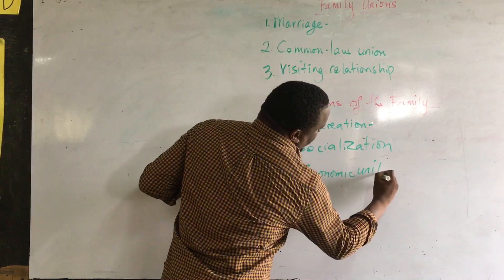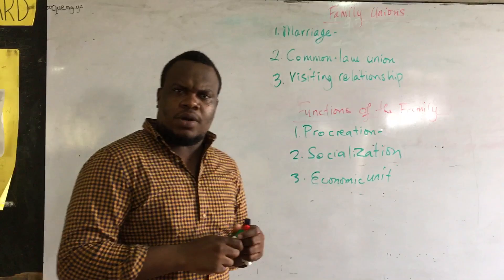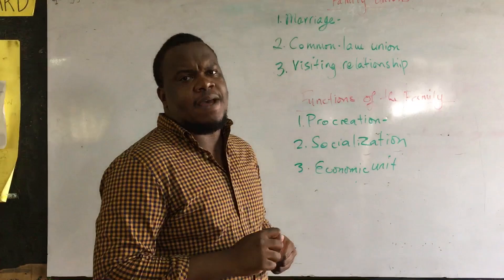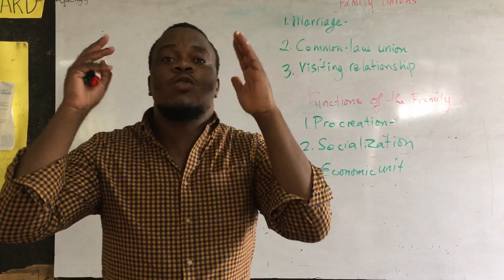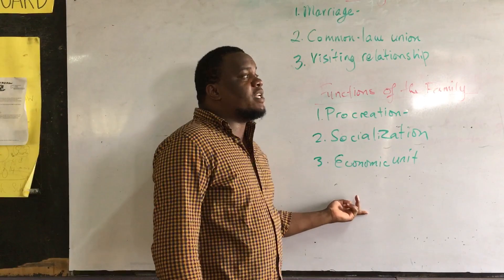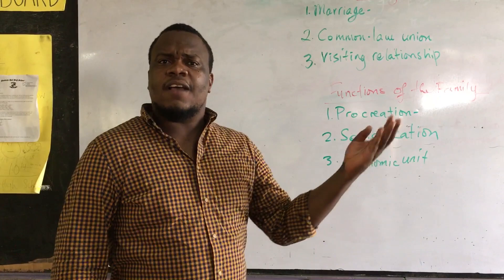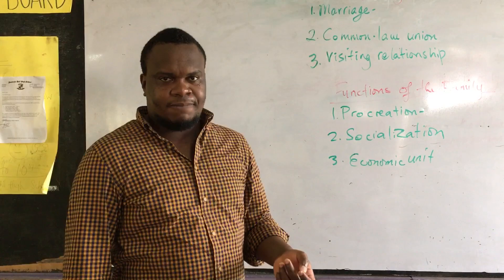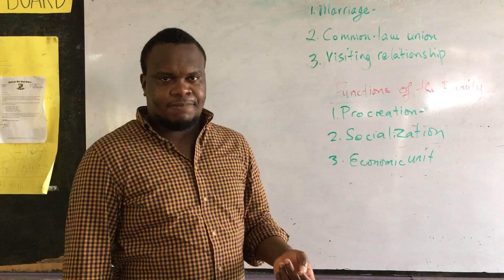The next function is the economic function. The family functions as an economic unit, which is extremely important because money is very important and valuable to a family. Families need their needs and wants to be met. Family members go out as monetary contributors or breadwinners, bringing money home so that family members' needs and wants can be met — basic needs like food, clothing, shelter, and education.